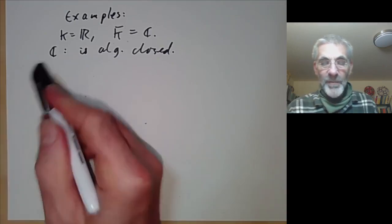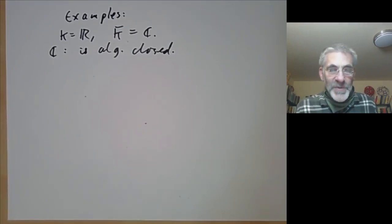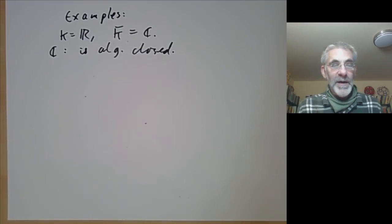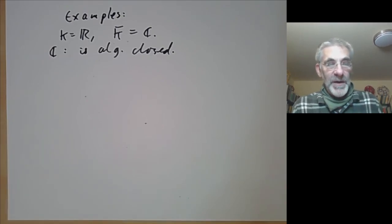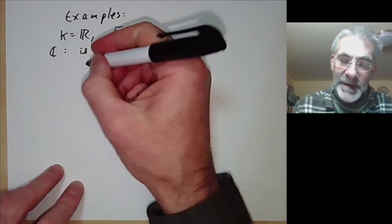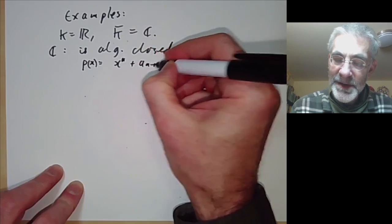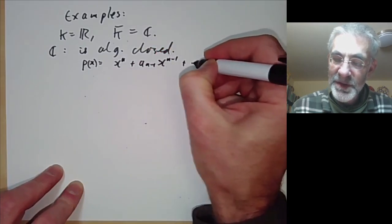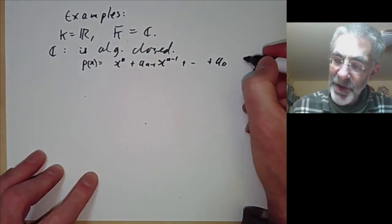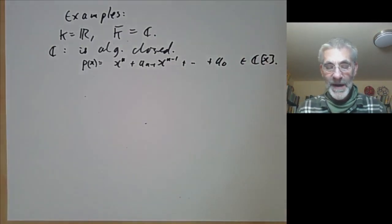How do we prove that the complex numbers are algebraically closed? We'll give an algebraic proof later on in the course, and if you've been to a complex analysis course you've probably seen a proof using Liouville's theorem. What I'm going to give now is a very short topological proof. Suppose p(x) = x^n + a_{n-1}x^{n-1} + ... + a_0 is a polynomial with coefficients in the complex numbers — we want to show that p has a root.